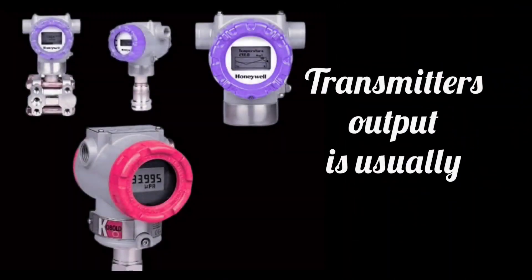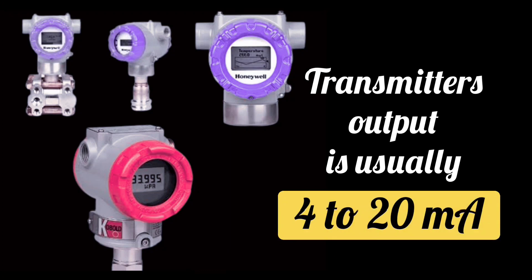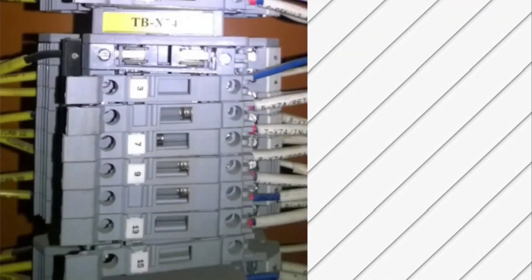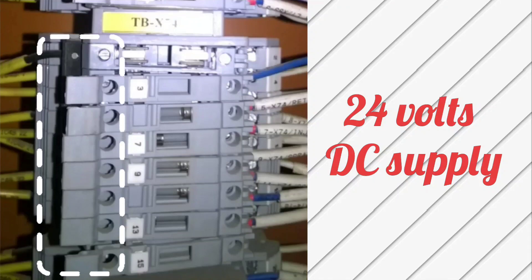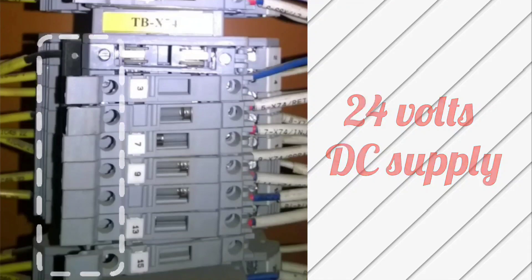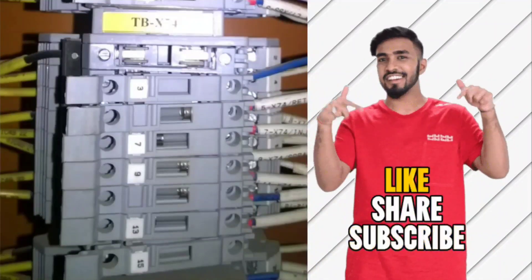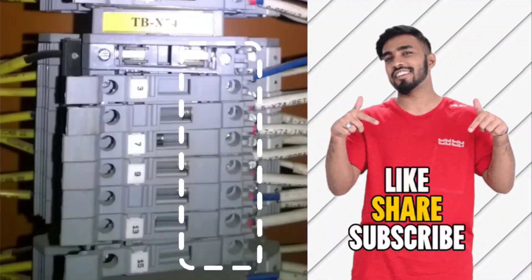The output of transmitters is usually 4 to 20 milliampere. There is a type of TB for transmitters in PLC panel. For 24 volts supply, a strip will appear. Positive for all transmitters will connect from its front terminal only.